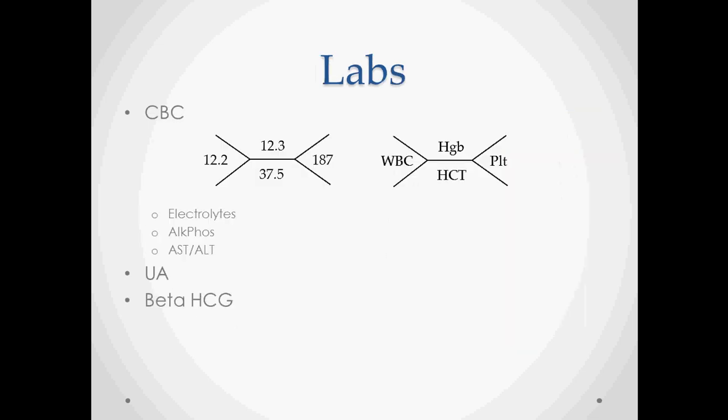Then you send off the labs — these are just some made-up numbers here. The most important thing to look at on the CBC is the white blood cells, which are going to be elevated in acute appendicitis. There is a possibility of bleeding, so you might end up with an anemic patient — look at your H&H levels as well. Electrolytes, ALK-PHOS, AST, and ALT can help rule out other things on the differential, for example liver problems and gallbladder issues.